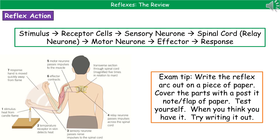If we consider what's actually going to happen in the reflex arc, there's a flow chart you need to know. We start with a stimulus, which is detected by our receptor cells. They send an electrical impulse along the sensory neuron to the central nervous system. In our spinal cord, it passes through a relay neuron to a motor neuron, which carries that electrical signal to the effector, which then triggers the response. Remember: if the effector is a muscle, it will contract to make things move; if the effector is a gland, it will release a hormone to bring about the response elsewhere in the body.